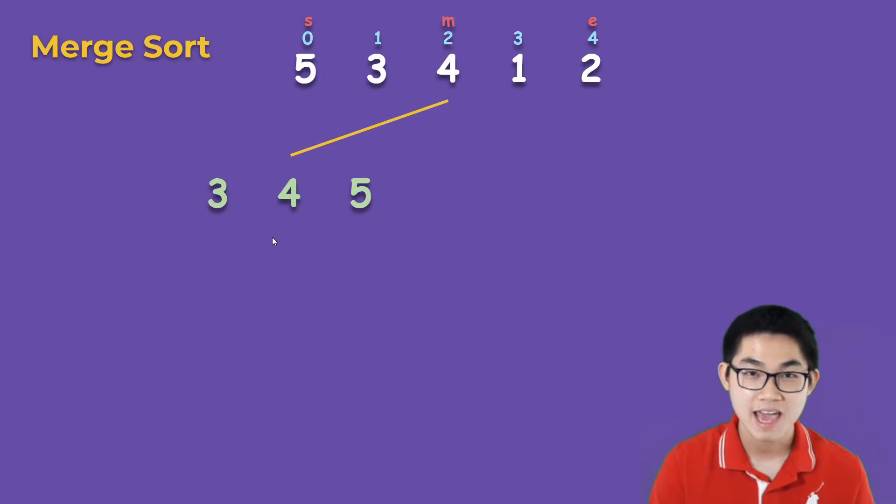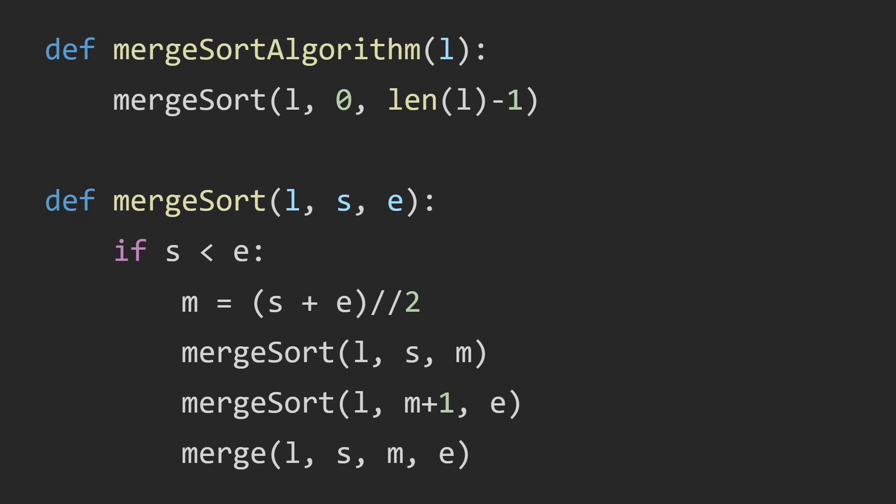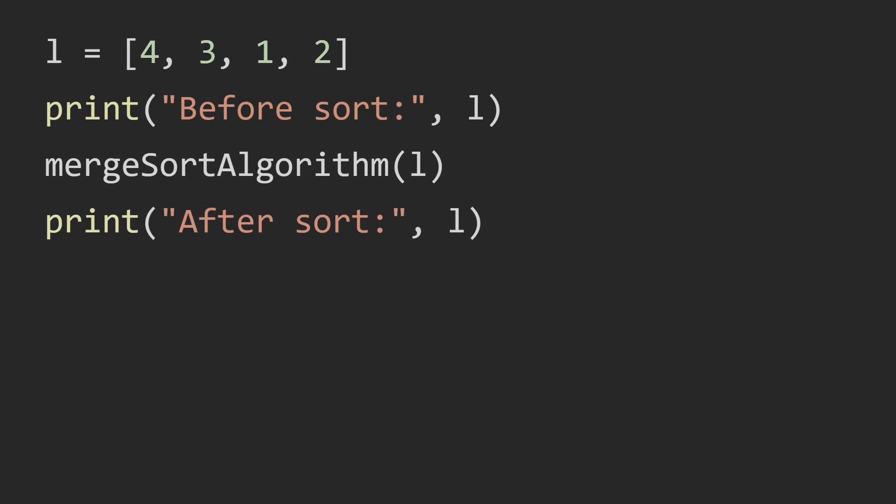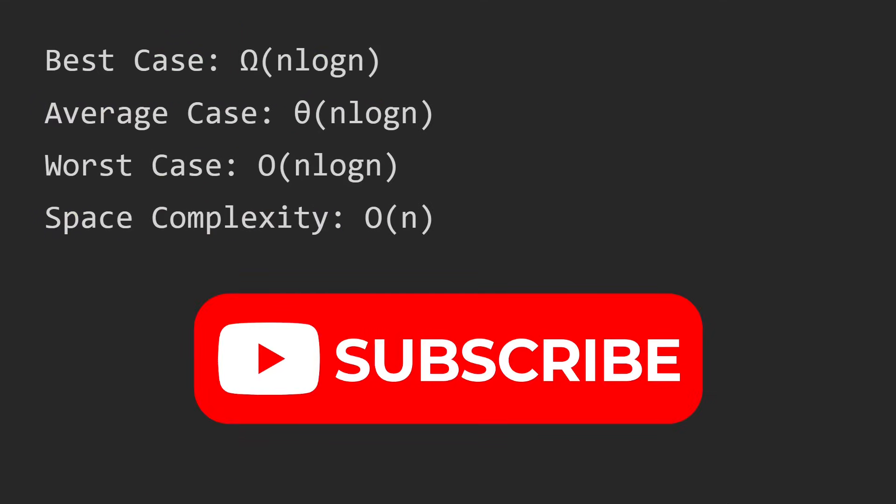Now let's take a look at the Python code. Here is the merge sort function and this is the merge function. Here is the test case. For the best, average, and worst cases, they're all n log n. And how is it n log n? Well, that's going to be discussed in a different video. So I hope you guys enjoyed this video. If you guys found it helpful, don't forget to subscribe and share. In the next one we'll talk about quicksort.